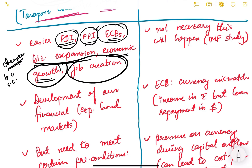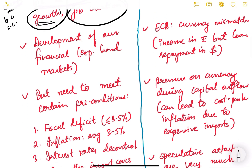Another argument was that capital account liberalization would develop our financial markets, especially bond markets, because more foreigners would invest. The markets would deepen as demand increases, price discovery would be better, and people would have more options to invest with no limit on investment.